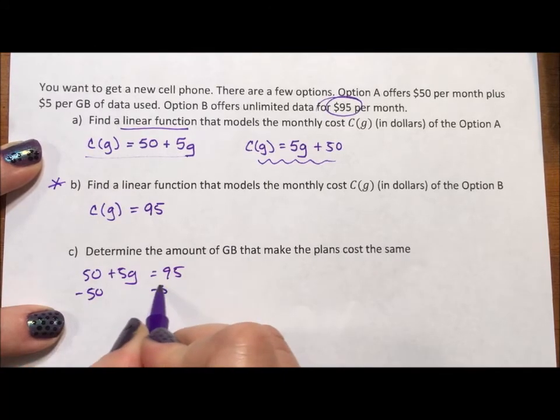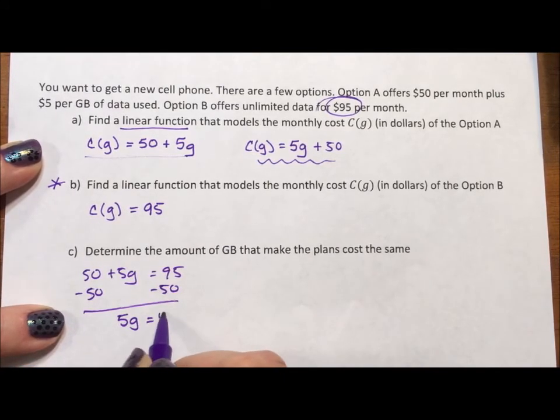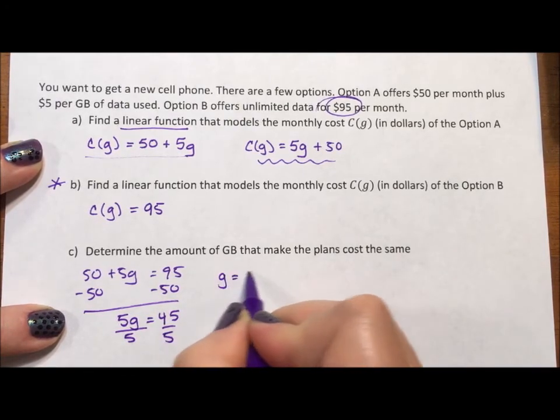Subtract 50. 5g equals 45. Divide by 5. And g is equal to 9 gigabytes.